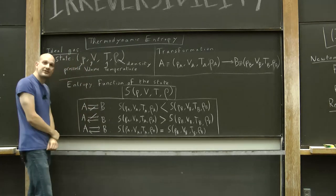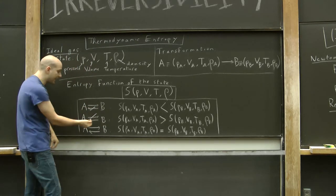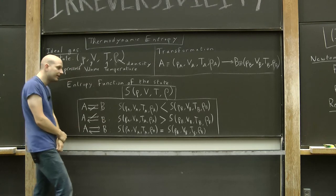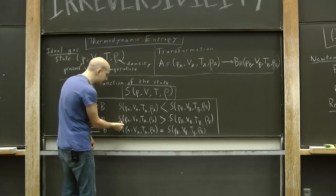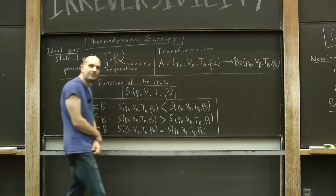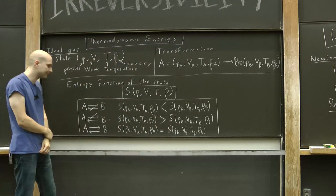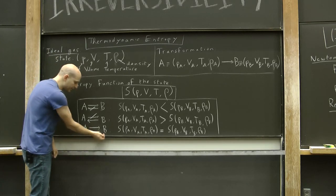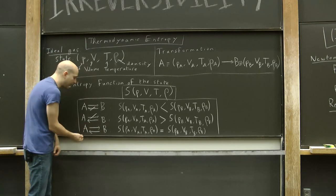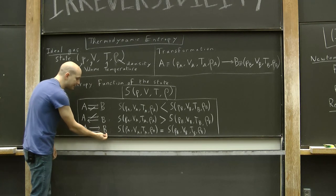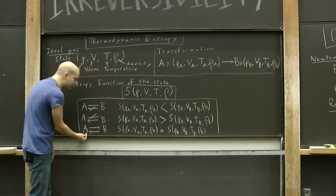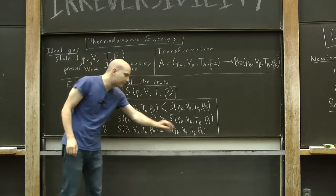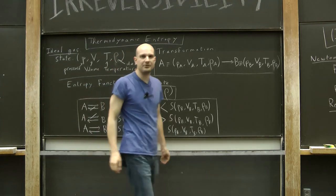Or this pair of states may be such that I can get from B to A but not back from A to B, in which case the entropy of A will be equal to the entropy of B. Or a third situation, there may be a situation where I can get from state A to state B and back from state B to state A, in which case the entropy of A will be equal to the entropy of B.